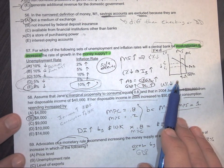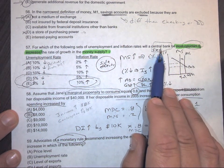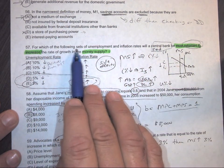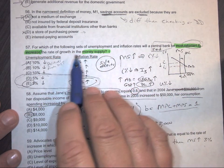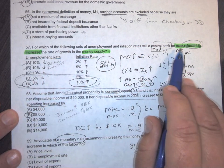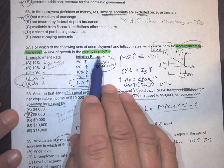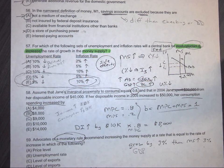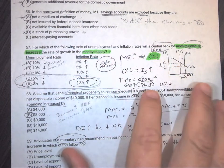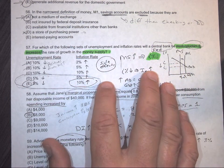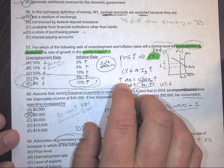Okay, 57. This one looks a little ugly, but it's not that bad. For which of the following sets of unemployment and inflation rates will a central bank, remember that's the Fed, be most reluctant to increase the rate of growth in the money supply? All right, so take your time with the wording of these. So what I'm doing is I'm looking at these unemployment and inflation rates and which one of these situations would make them not want to increase the money supply. So increasing the money supply does what for interest rates?